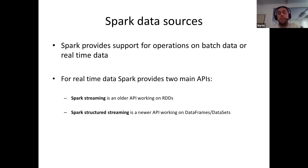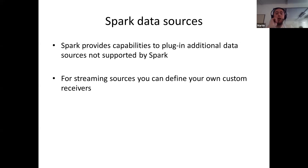Apache Spark provides operations on both batch and real-time data. For real-time data, there are two main APIs: Spark Streaming, which works on top of the old RDD format, and Spark Structured Streaming, which works on the newer DataFrame and Dataset formats. If a data source isn't provided by default in Apache Spark, you can build your own — Apache Spark provides capabilities to plug in additional data sources. For streaming data sources, you can define a custom receiver for receivable data.